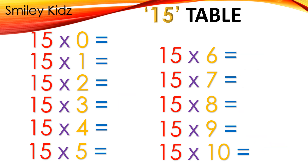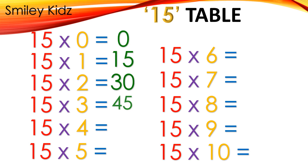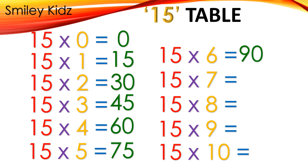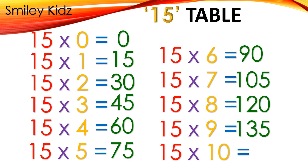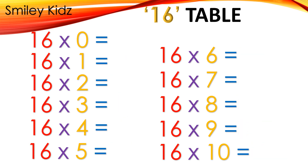Table 15: 15×0=0, 15×1=15, 15×2=30, 15×3=45, 15×4=60, 15×5=75, 15×6=90, 15×7=105, 15×8=120, 15×9=135, 15×10=150.